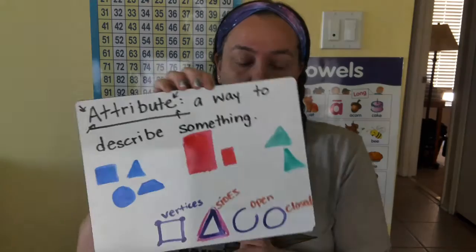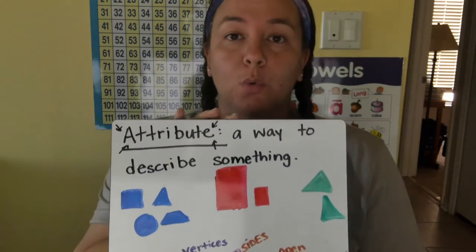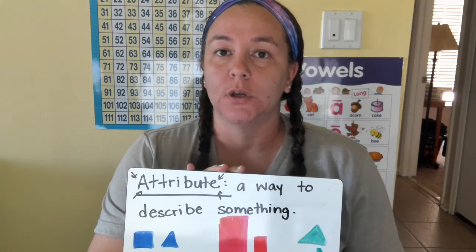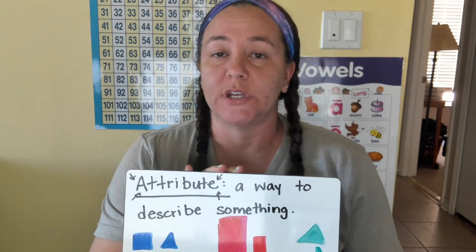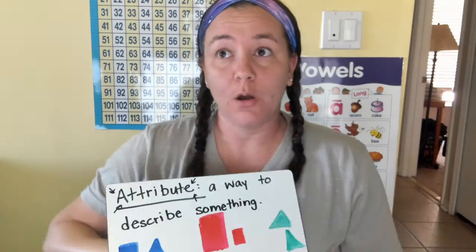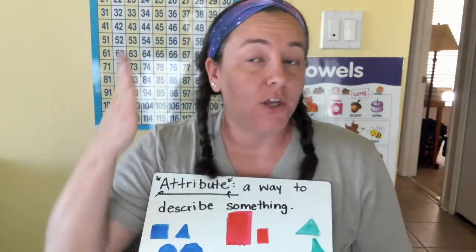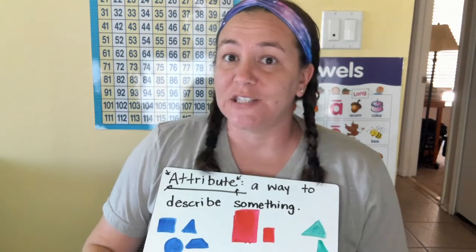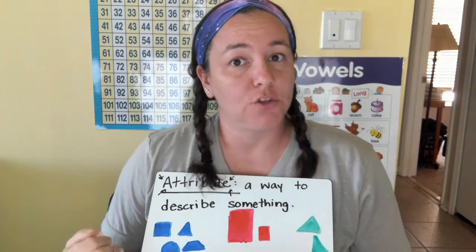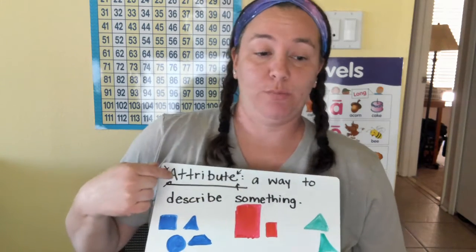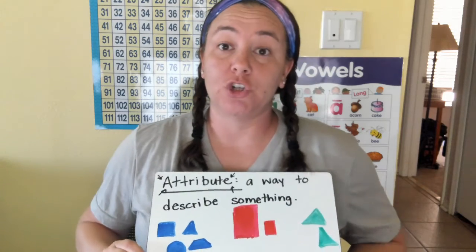They can be a little confusing. So here's my whiteboard, and I wanted to go over the word 'attribute.' Attribute. That means a way to describe something. So if I said, the attribute of that girl over there — she has brown hair, she's tall, she's a very nice singer — those are ways to describe someone. So we're describing shapes' attributes, the way we describe shapes.